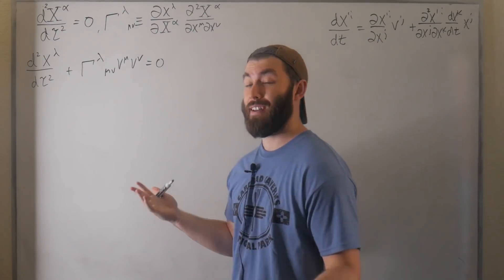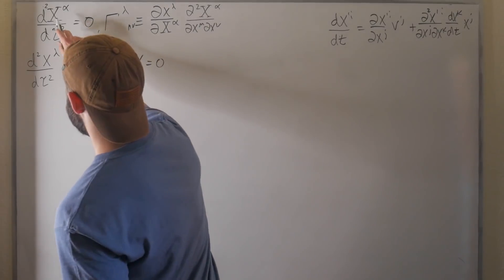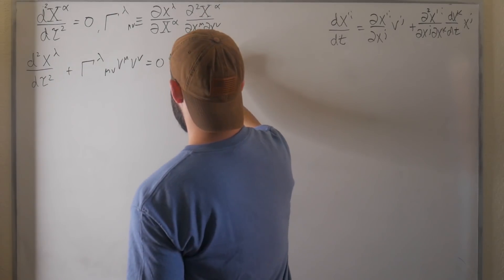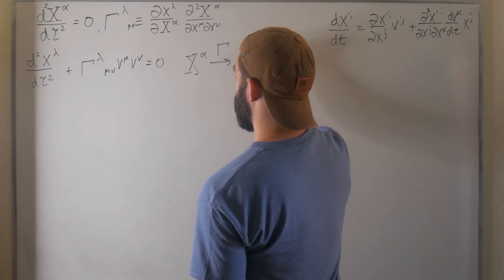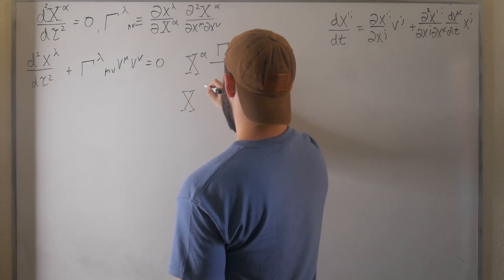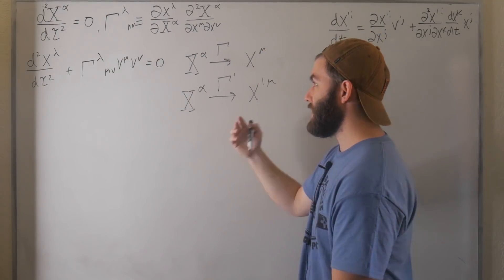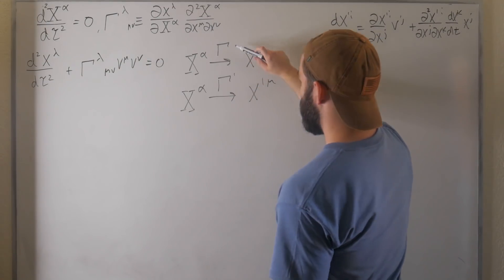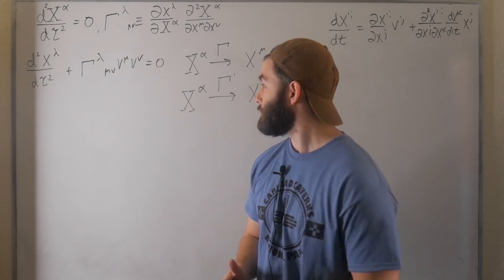If you haven't seen the previous video, there's a link in the description — go check it out and then come back. We have an object with three indices here, and the topic of this video is to understand how it transforms. Is it a tensor? Or is it what people in the industry would call 'not a tensor'? If we want to know whether something is a tensor, we know how to do that — we just have to see how it transforms.